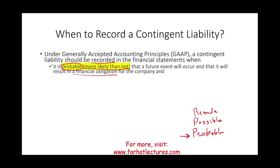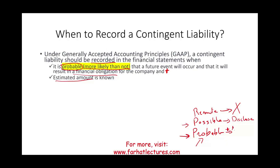Companies get sued all the time. If there is no chance you are going to lose — a remote chance — you don't mention it. If the probability is possible, you disclose. If the possibility is probable, we need to meet one more condition: probable plus you know the amount. You need to be able to estimate the dollar amount. When those two conditions — probable plus estimable amount — exist, you record a liability. If it's only probable but the amount is unknown, you disclose, not record.